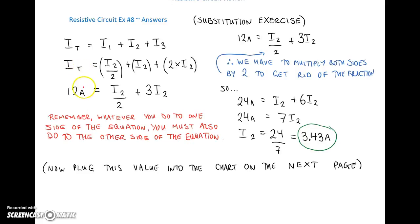Then we drop in our total current of 12 amps. And we can see that 12 amps is equal to I2 divided by 2 plus another 3 times the second current. And remember that whatever you do to one side of the equation, you've got to do to the other side of the equation. So the first thing we may want to do is to get rid of that denominator there. So in order to do that, I have to multiply everything by 2. I've got to multiply this by 2, this by 2, and this by 2.